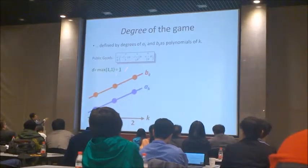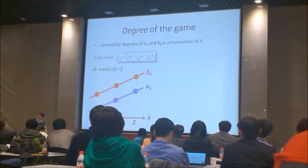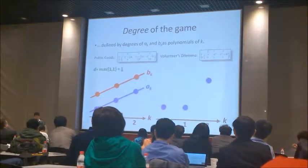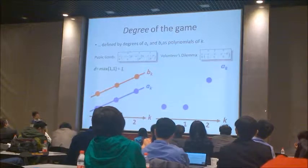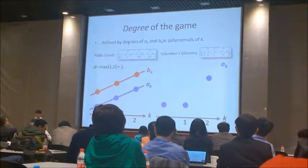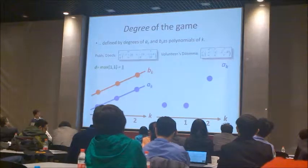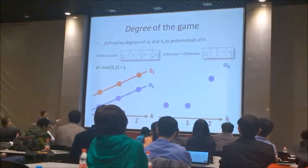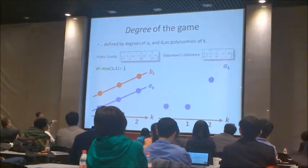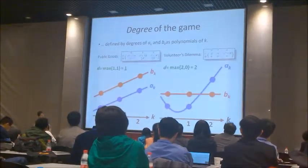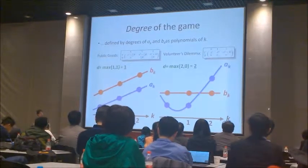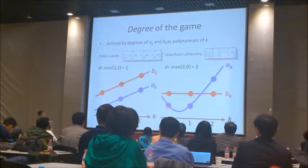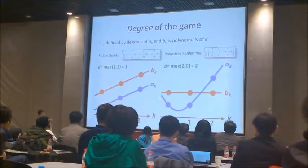The maximum degree of 1 and 1 is 1, so this number is actually responsible for the dynamic. For the volunteer's dilemma, we know that the payoff of cooperators is aligned this way, and the payoff of defectors is aligned flat. So in that case, we cannot align those in a line, but we need a degree 2 curve — the parabola.